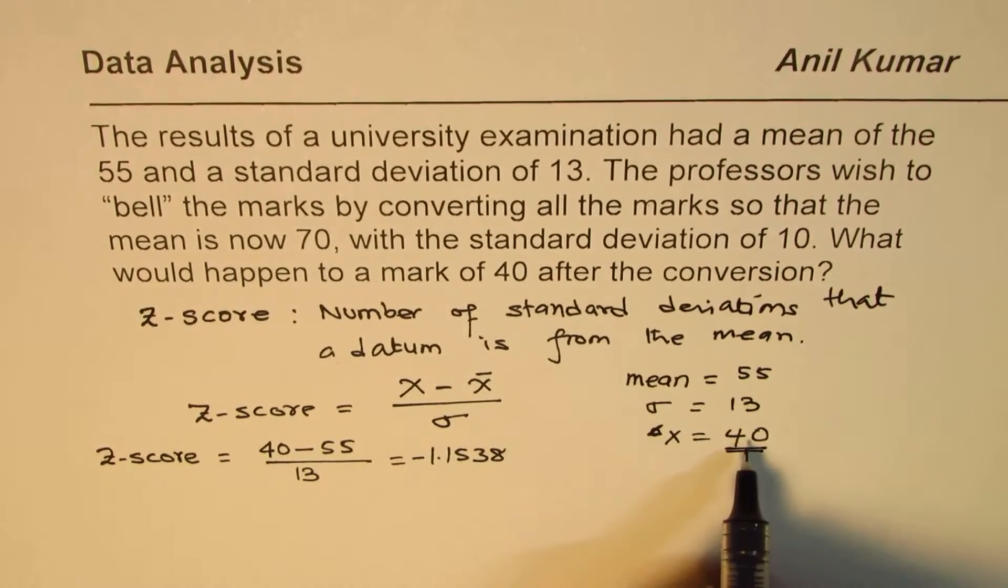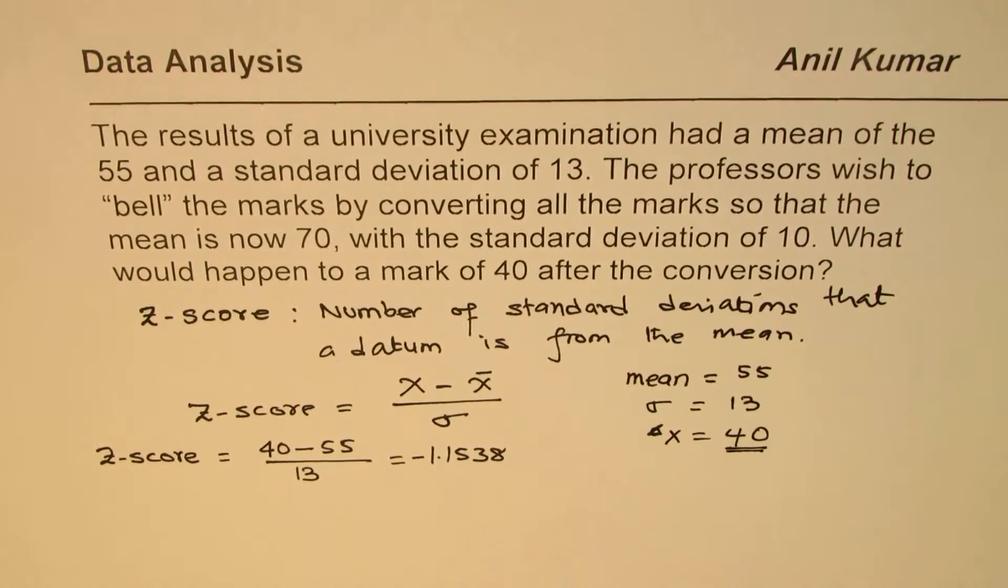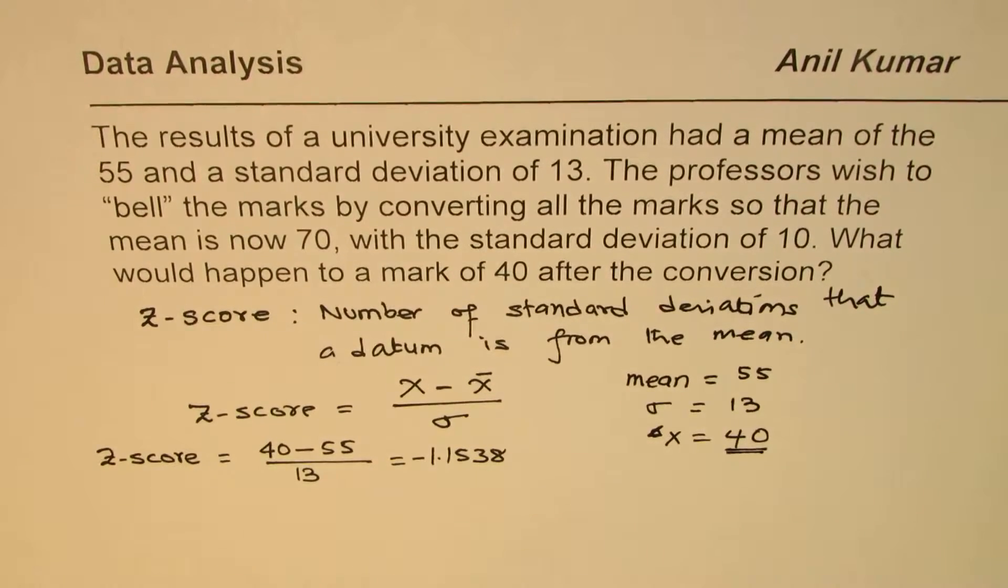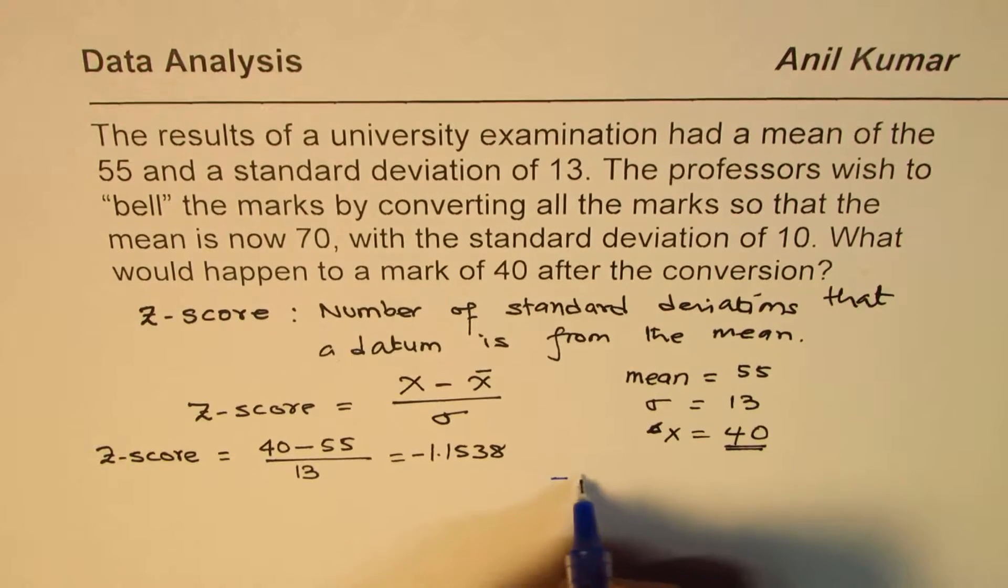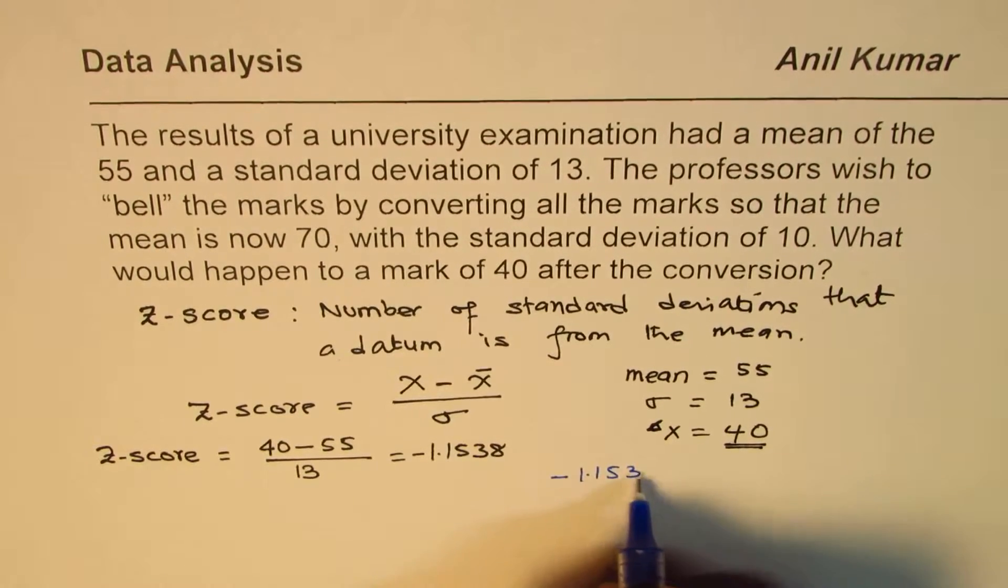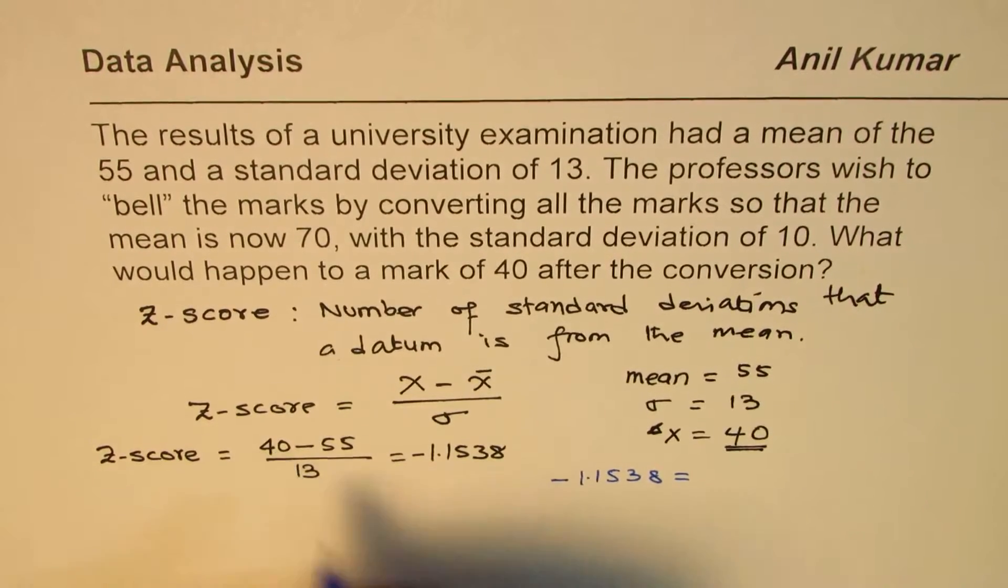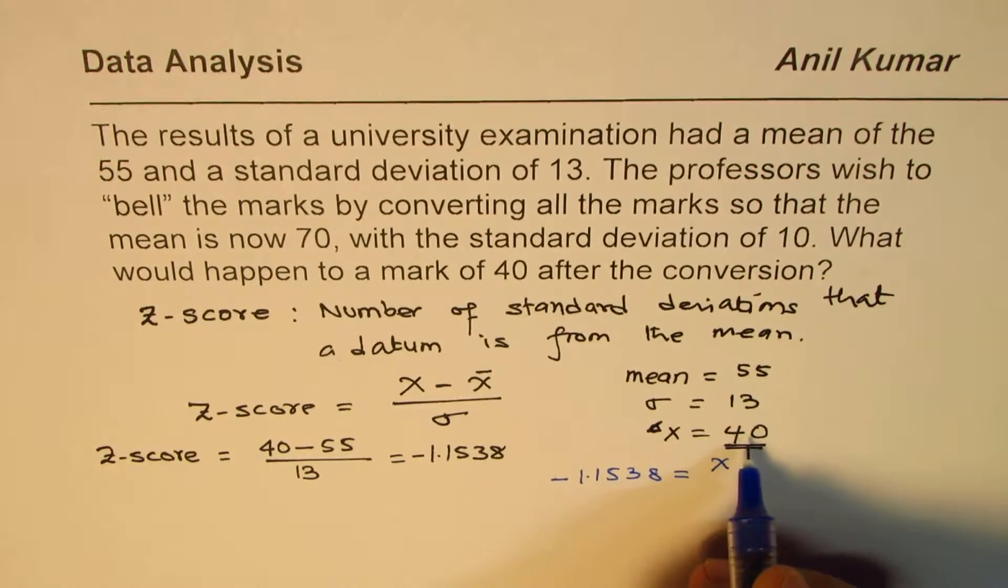We want to find what is going to happen to a data point whose value is 40. So what is the new value of 40? That is what we want to know. And we know that z-score is the same, so keeping the z-score same, which is minus 1.1538, should be equal to the new value of this 40.